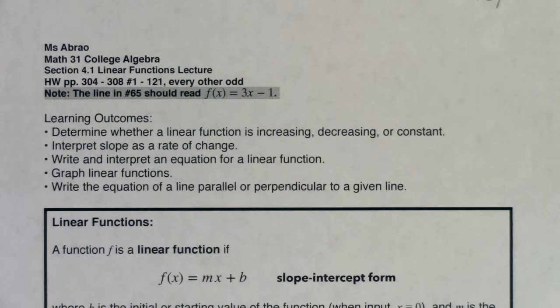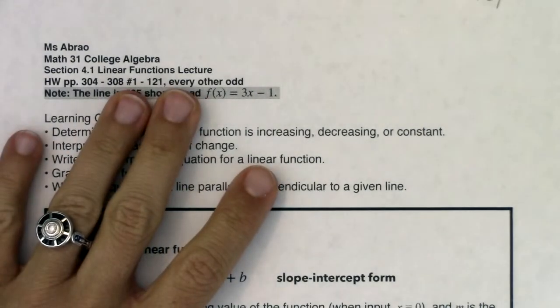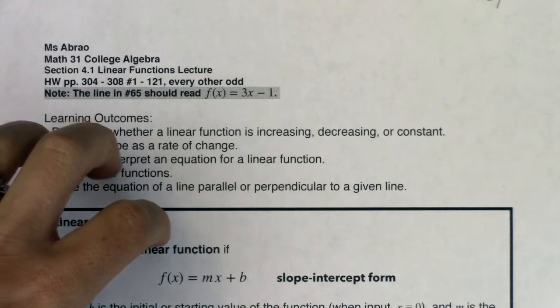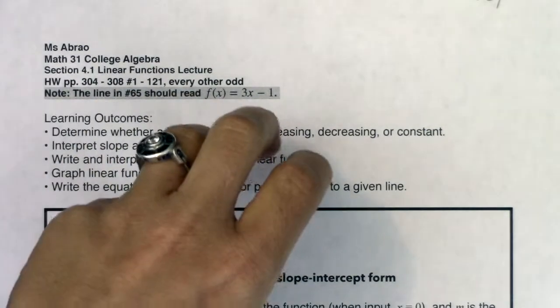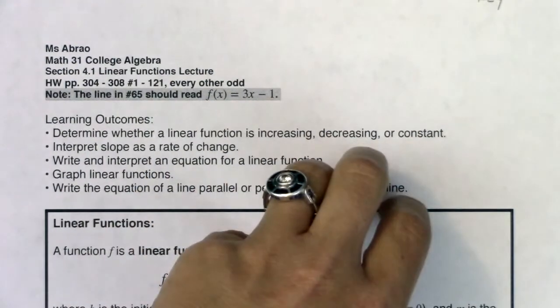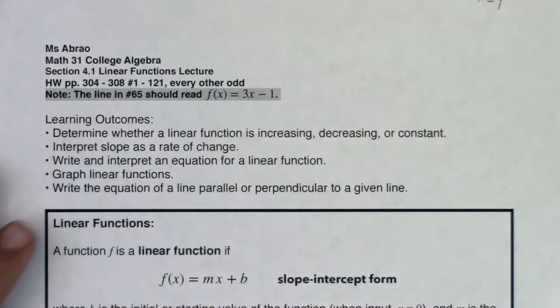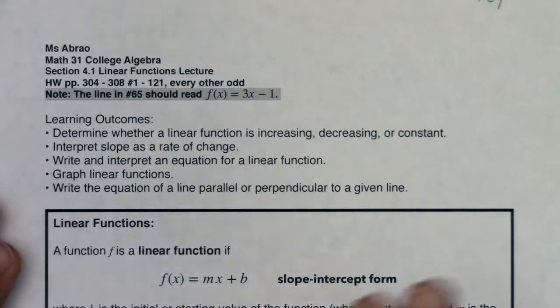Hey Math 31, welcome to chapter 4. Now that we're through our review chapters, we're going to start unpacking different families of functions as we move throughout the rest of the course. What that means is we're going to look in chapter 4 at just linear functions. Chapter 5 is going to take us to polynomials and then rationals. Chapter 6 is going to take us to exponentials and logarithms.